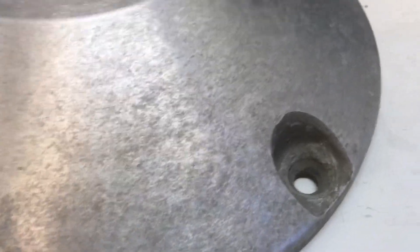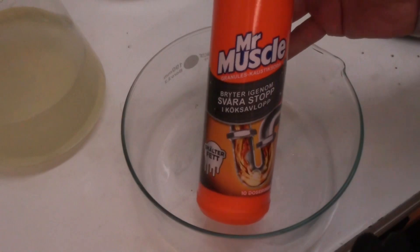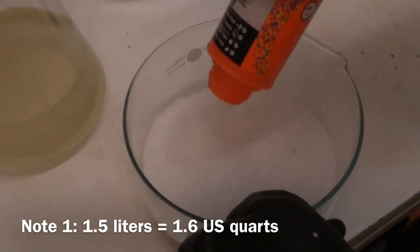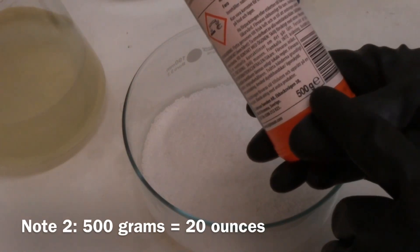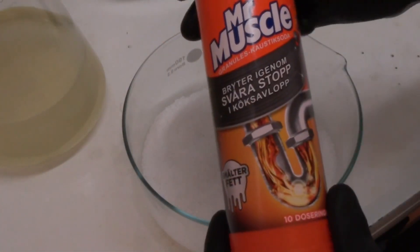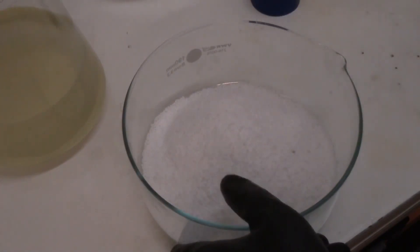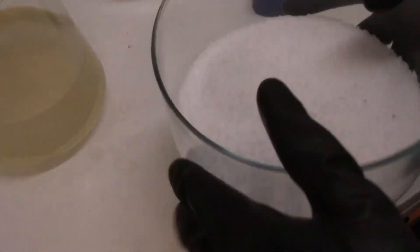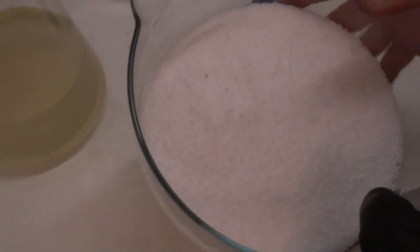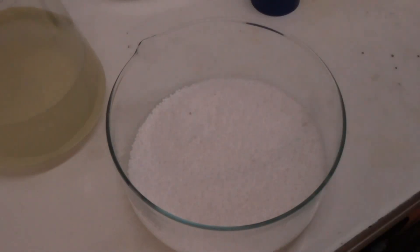We're going to dissolve this into 1.5 liters of water. This is 500 grams of sodium hydroxide. Now if you buy something like this for your drains or sewage system, you will get what's called a technical grade of sodium hydroxide. You can already see that it's contaminated with some black stuff. This is not chemical grade, and in a moment we will see the consequences of that. Now I'm adding 1.5 liters of water, just regular tap water.